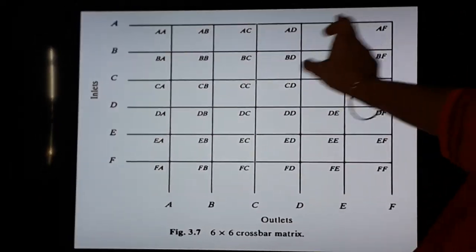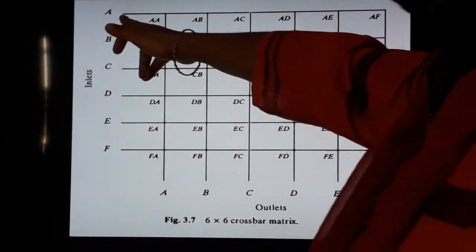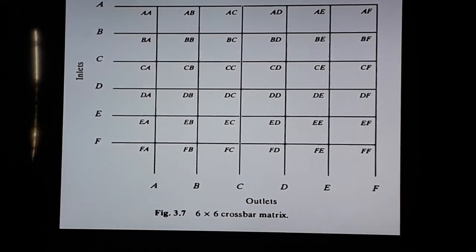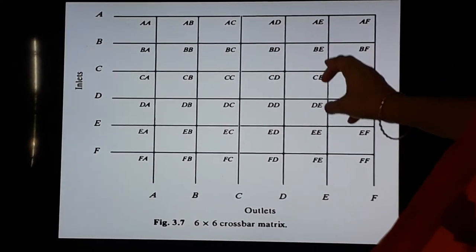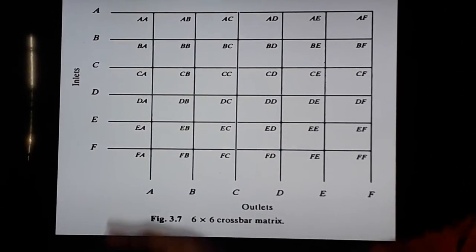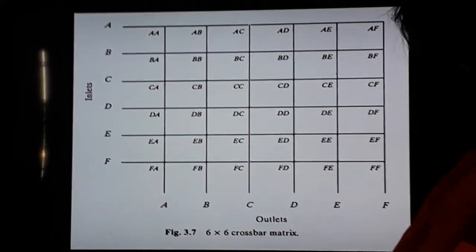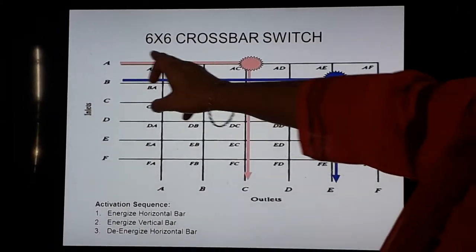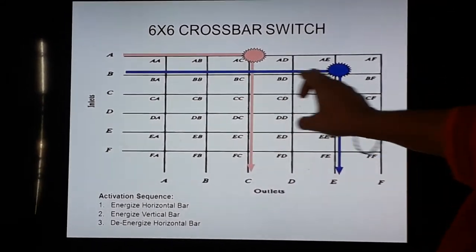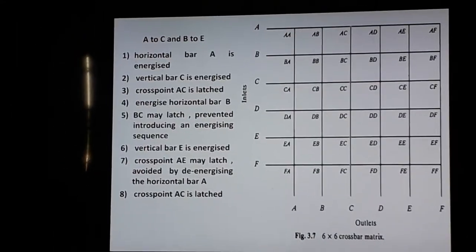For the first case we want to communicate subscriber A with subscriber C, and for the second case we want to see the communication of subscriber B with subscriber E. So these are the two sequences we will study today. From the diagram we can also see that subscriber A is talking to subscriber C, and similarly subscriber B is talking to subscriber E.